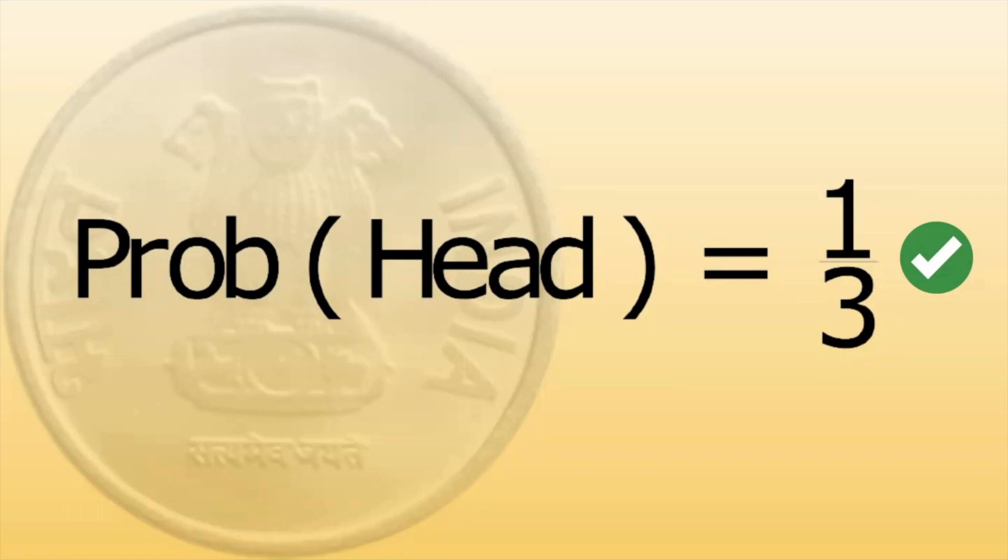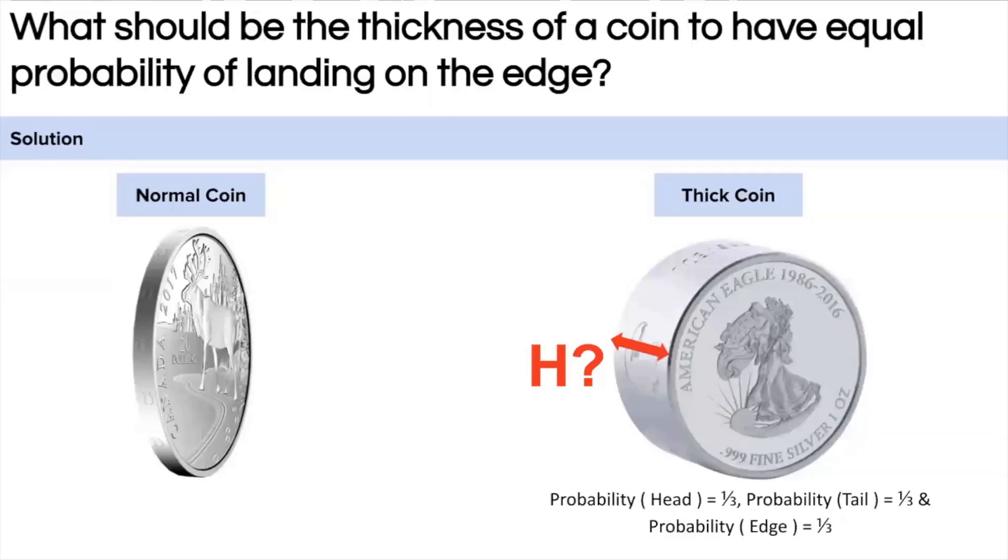Today's question is a very interesting question. The question is to calculate the thickness of the coin so that the probability of landing of the coin is equal for head, tail, or when falling on its edge. As you can see, a normal coin here, the probability of head is equal to the probability of tail, and that is 1 by 2.